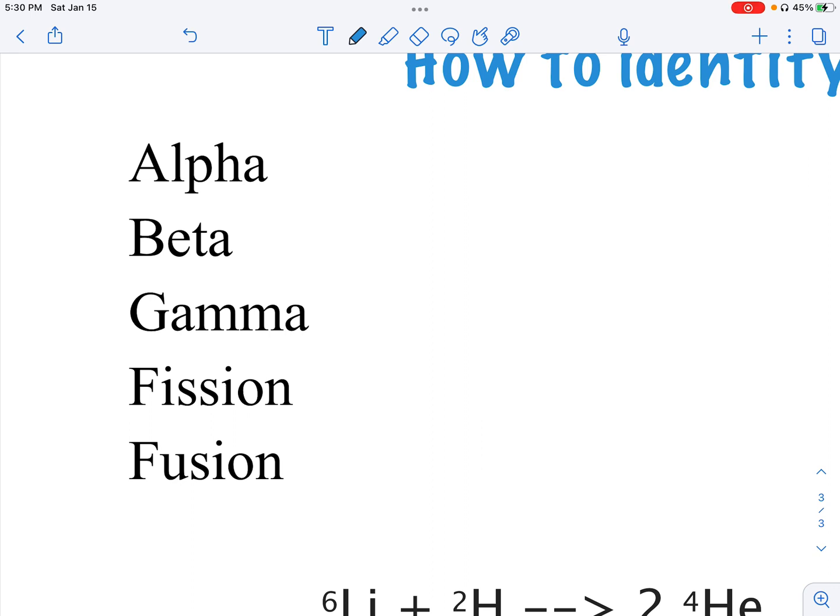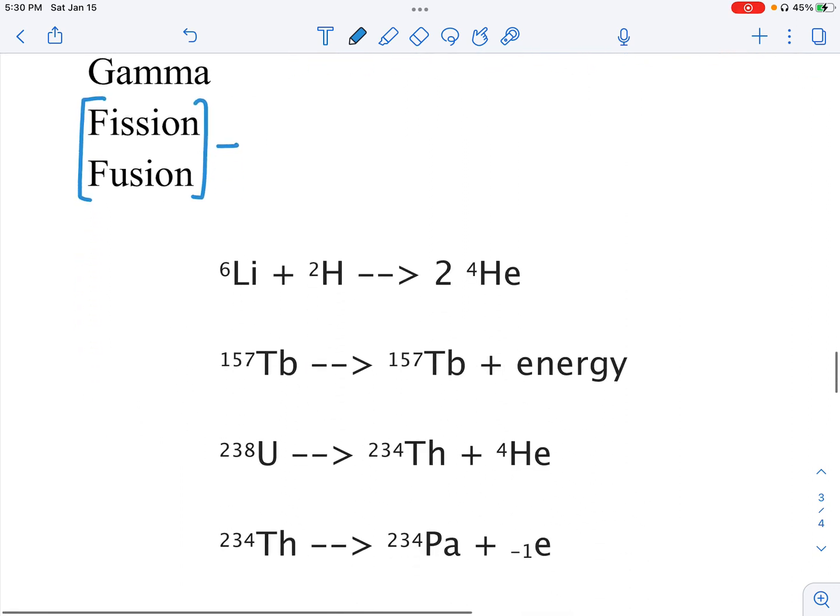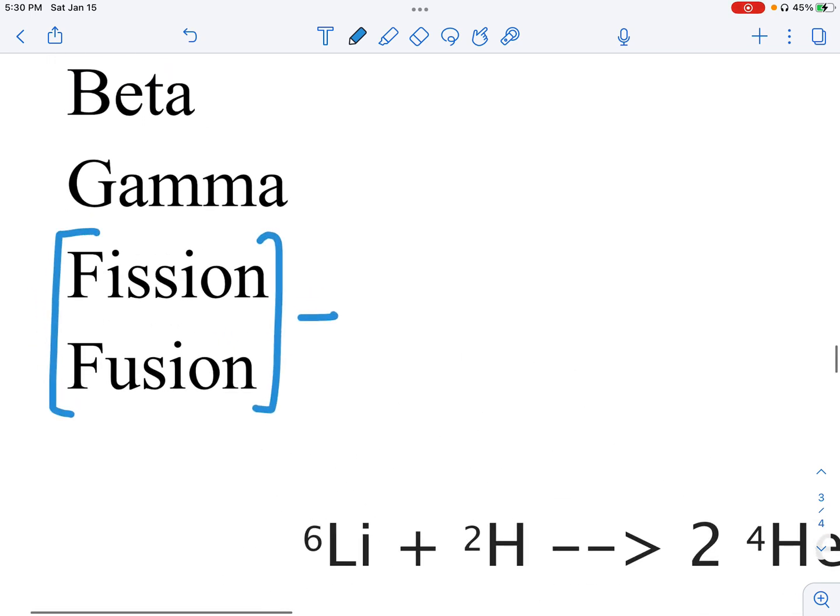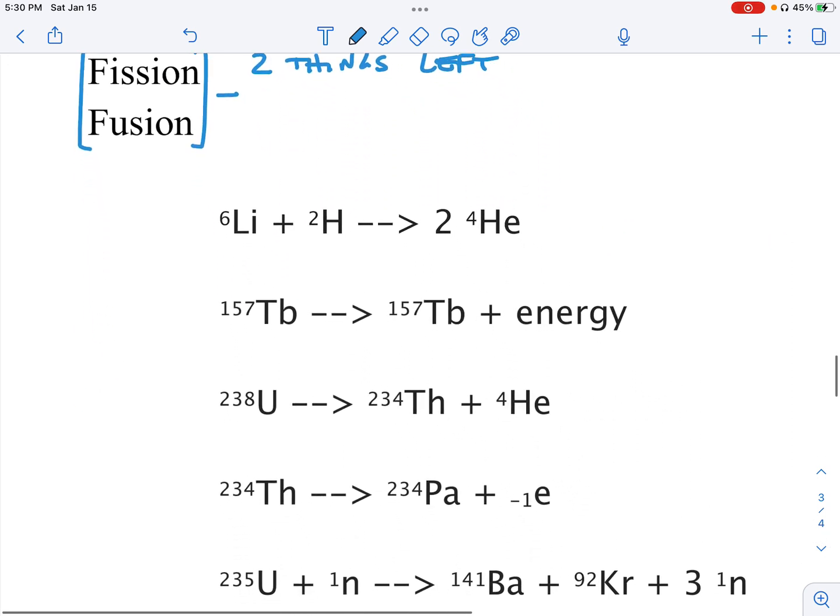Honestly, the way I like to do these, I like to do the fission and fusion reactions first. Both of these reactions have two elements or two substances. Sometimes it's a neutron, sometimes it's an element, whatever it is. Let's just call it two things. So two things on the left, on the reactant side. We're keeping it really simple. These have two things. And here's what I mean by that.